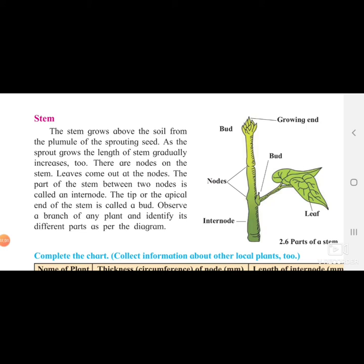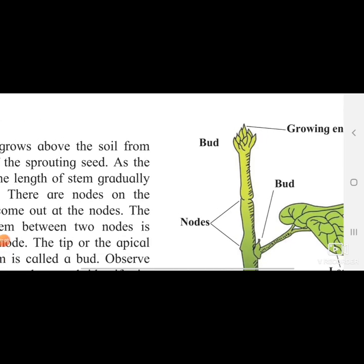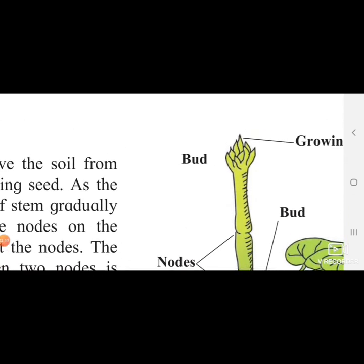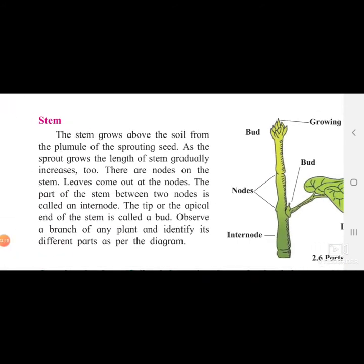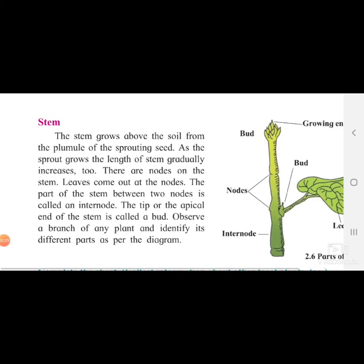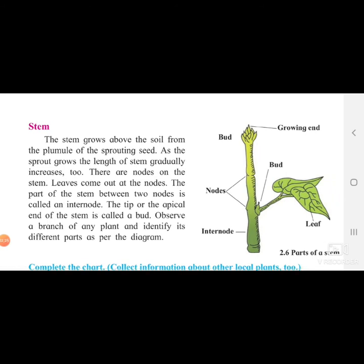The tip or apical end of the stem is called the bud. If you observe here, this is the topmost part of the stem - that growing end is called the bud, spelled B-U-D. You can observe a branch of a plant and identify the different parts as per the diagram. You can look at any plant nearby and locate and name the particular parts.